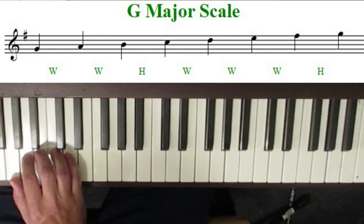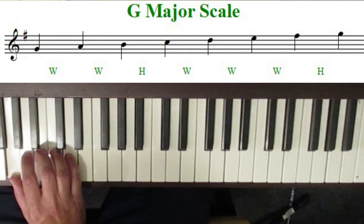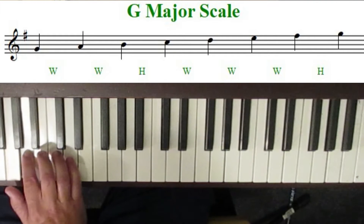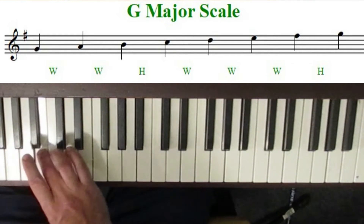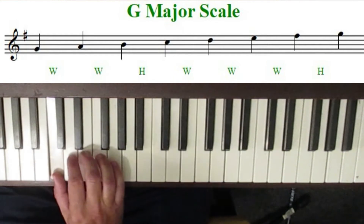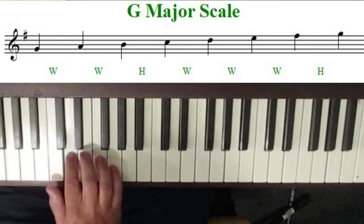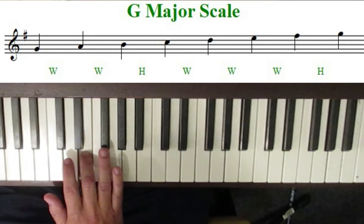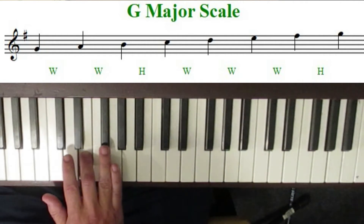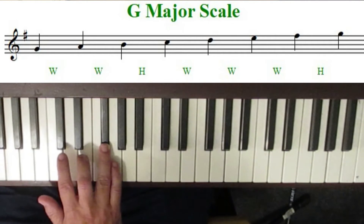Starting on the note G, I'm going to use the same formula: whole step to A, whole step to B, half-step to C, whole step to D, whole step to E, whole step — so I have to skip over F and play the F sharp — and round it off with a half-step back to G.